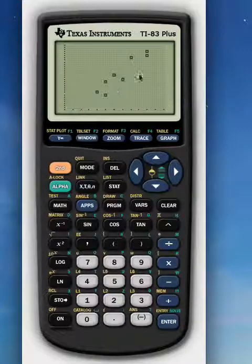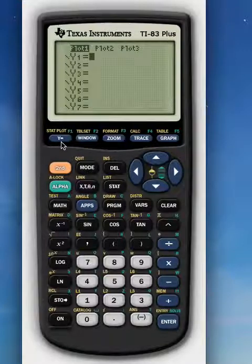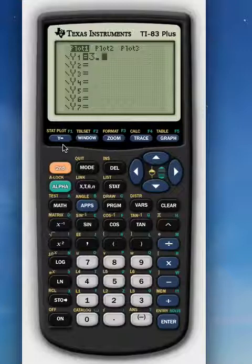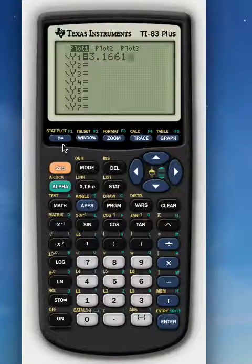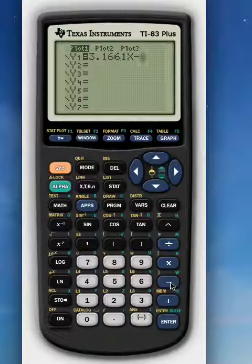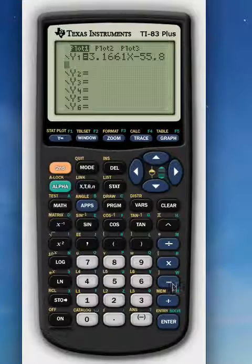And you can see the nice linear pattern there. Now, if in addition to that, I go into here and I enter in my regression line, which was 3.1661X minus... Now, even to 4 decimal places, this rounds off to 55.8, so that's what I'm going to use. So there's my equation.